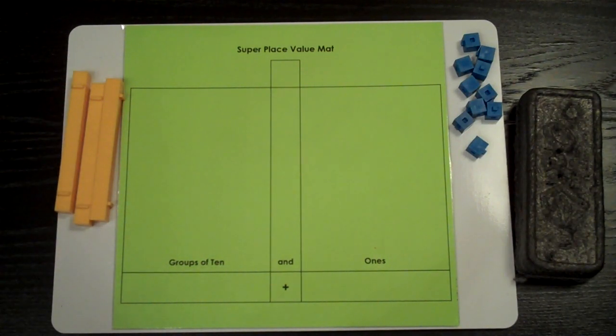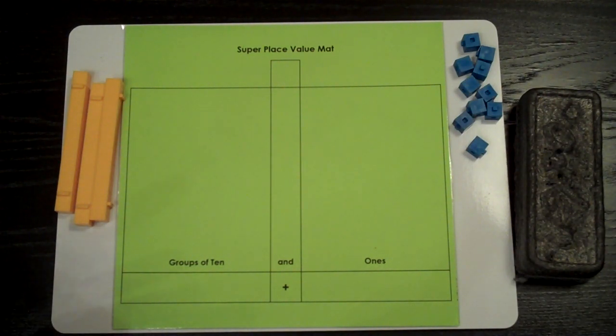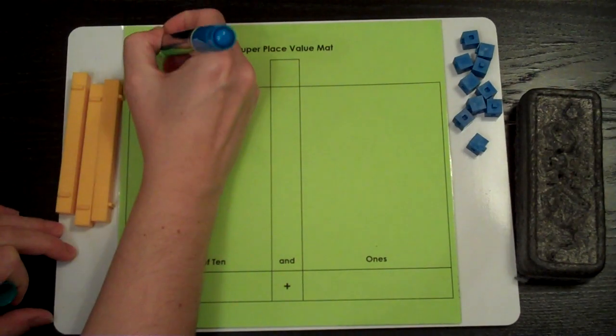Now let's practice using the mat and the base 10 materials to make a number. We're going to make 29. I'm going to write it so that I don't forget that we're going to make 29.